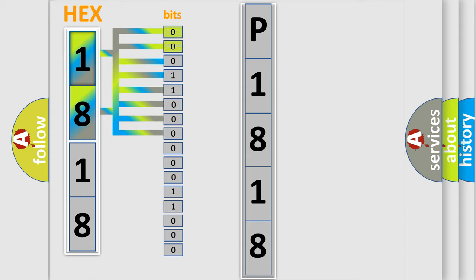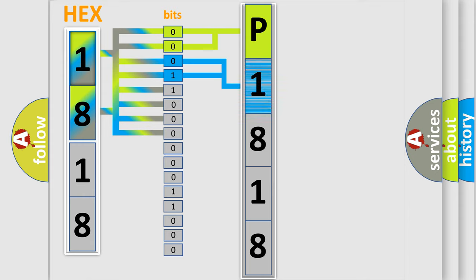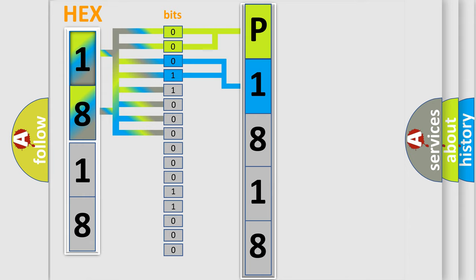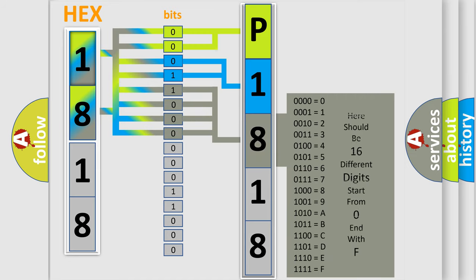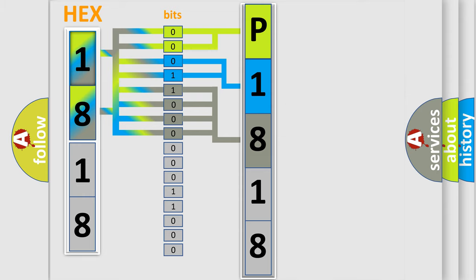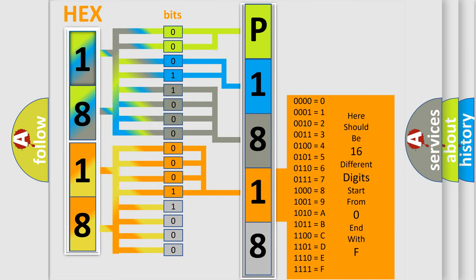By combining the first two bits, the basic character of the error code is expressed. The next two bits again determine the second character. The last bit styles of the first byte define the third character of the code. The second byte is composed of a combination of eight bits. The first four bits determine the fourth character of the code, and the combination of the last four bits defines the fifth character.